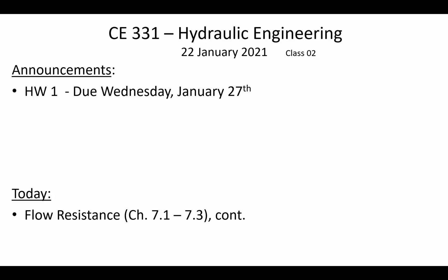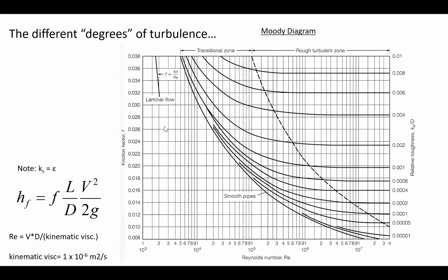We did talk about flow resistance on Wednesday when the Moody diagram was introduced. We worked through an example related to the Moody diagram. What the Moody diagram does is it tells us the Darcy-Weisbach friction factor F. This diagram is used to characterize how much resistance flow will experience as it goes through an enclosed conduit. That amount of resistance depends on a variety of different factors. The approach we followed is we determined the flow velocity V and used that to calculate the Reynolds number, which is the velocity times the diameter divided by the kinematic viscosity of the fluid.